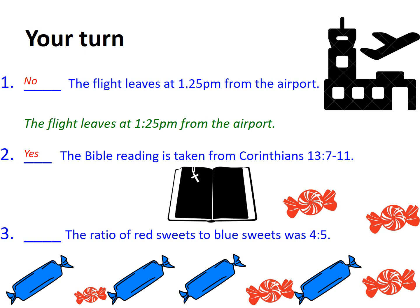Finally, the ratio of red sweets to blue sweets was 4:5. We've got a colon between the 4 and the 5, and this is correct — that is the standard mathematical way of referring to the comparison between two numbers using a colon.